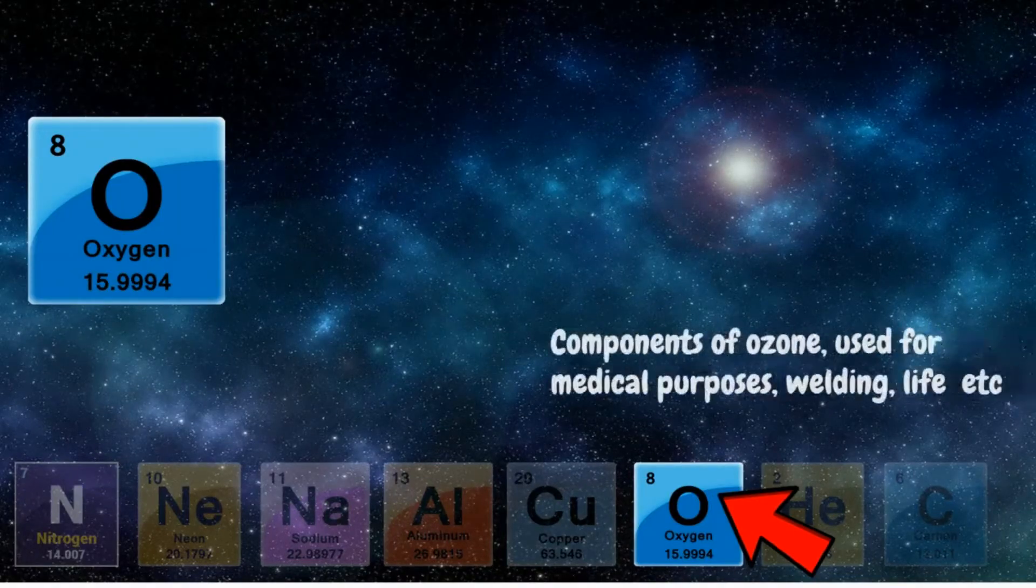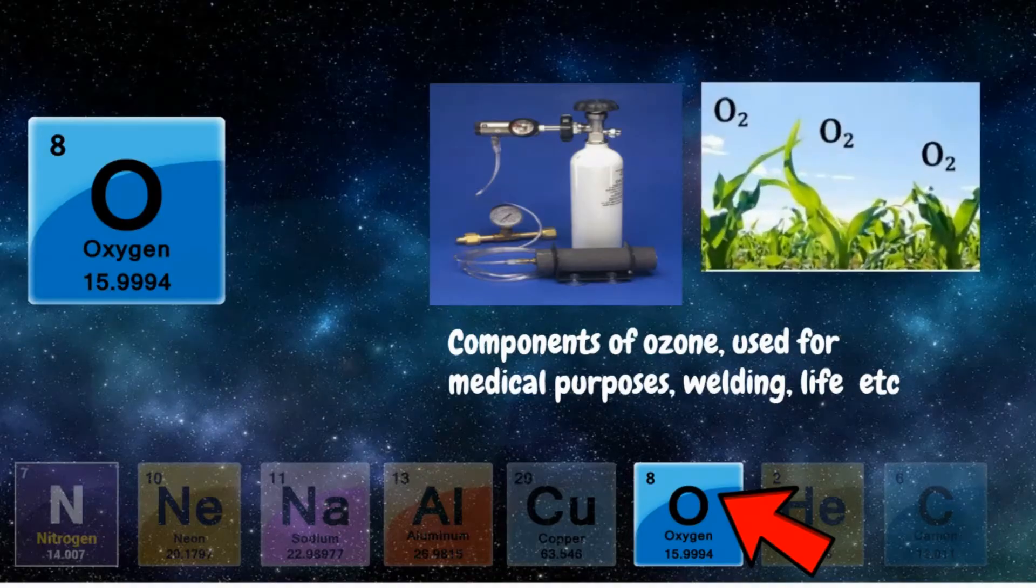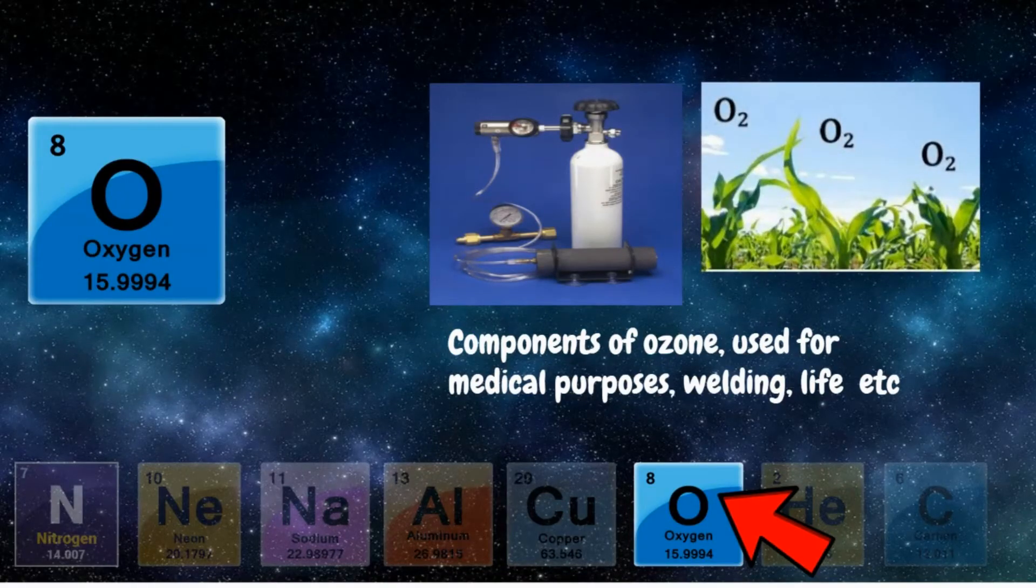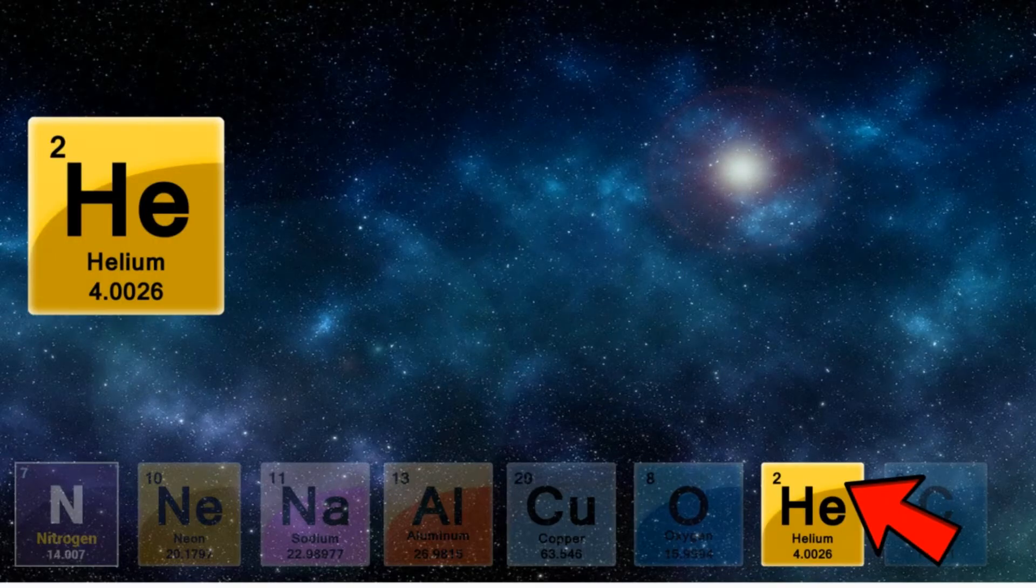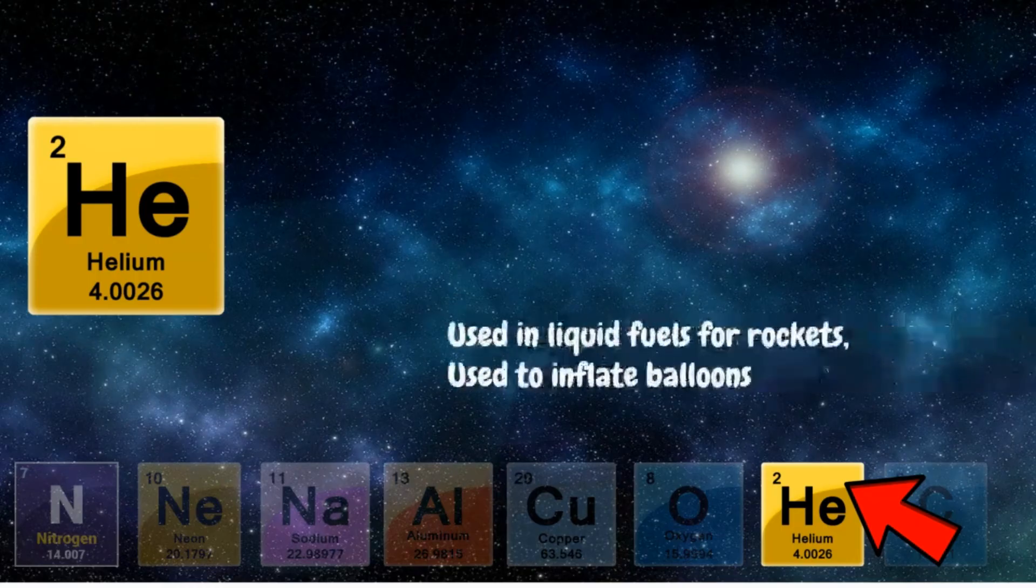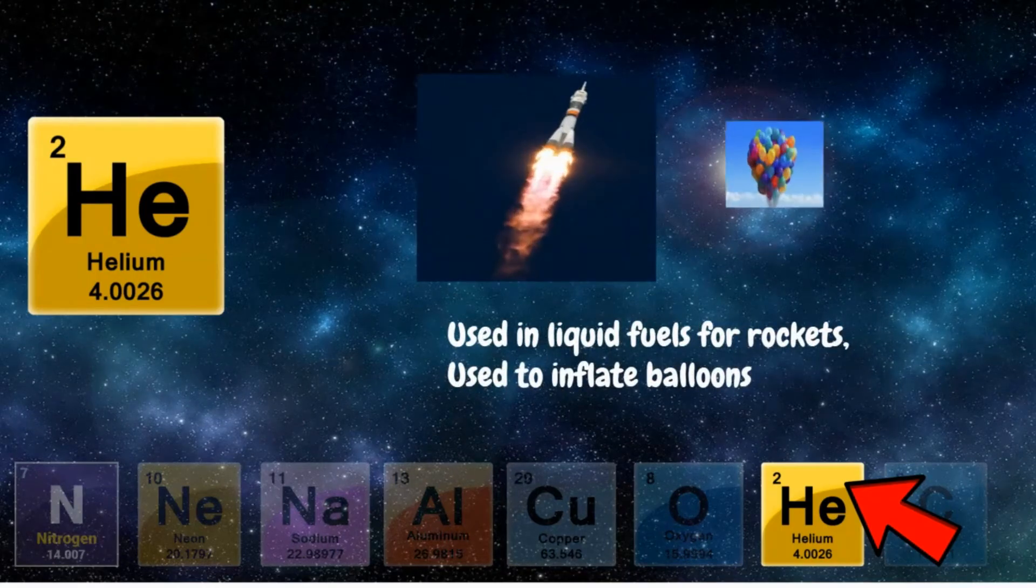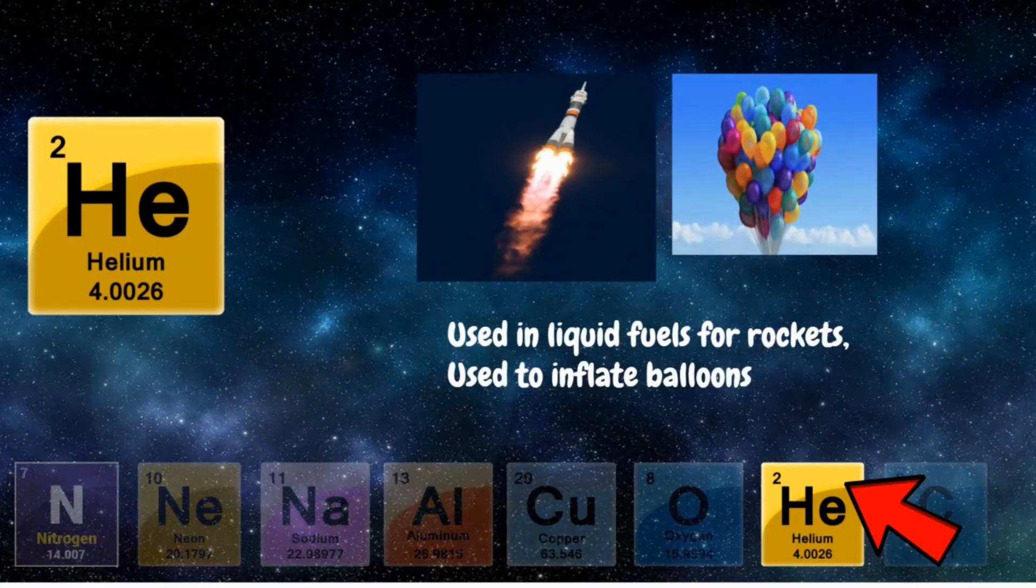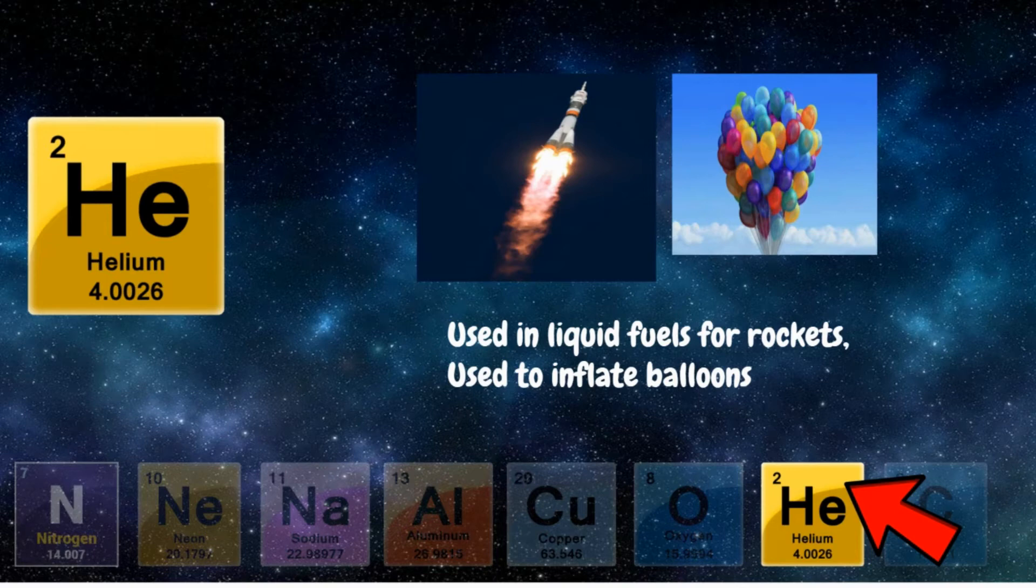Oxygen with a chemical symbol of O. It supports life, an essential element to the human body. It is also an important component of the ozone layer. Helium with a chemical symbol of He. It is used as fuel in rockets and it is also used to inflate balloons.